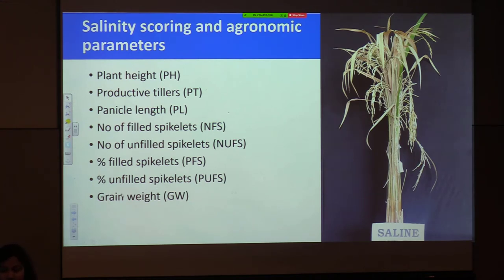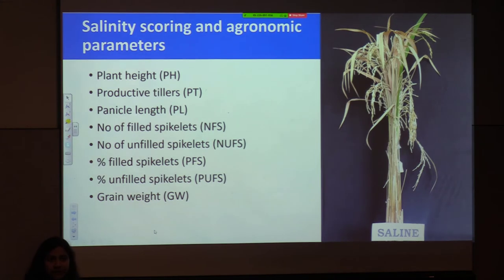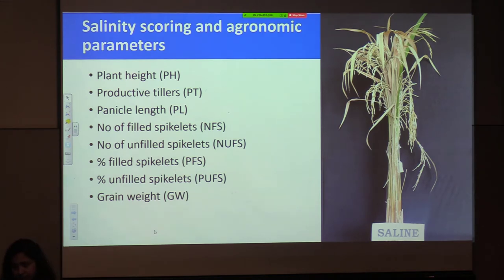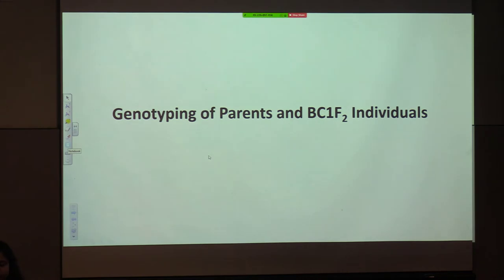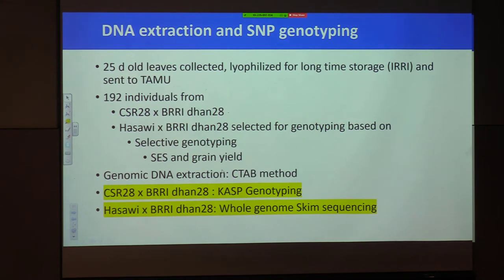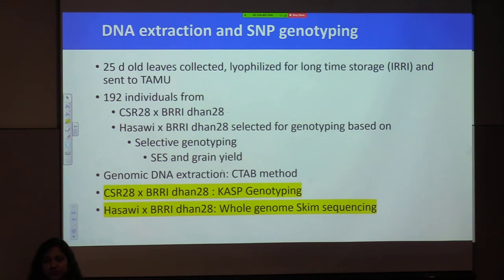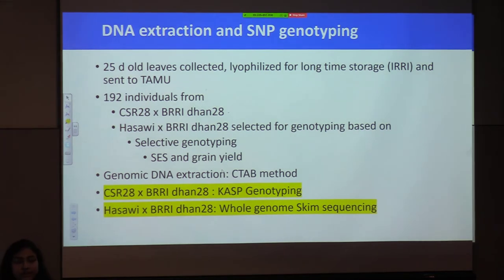This is how I finished my IRRI work — collecting data and completing the screening of two populations: CSR 28 × BRRI Dhan 28 from roughly February to August, and Hassawi × BRRI Dhan 28 in the second part of the year. Then I came back to Texas A&M and started my genotyping work. While at IRRI, we collected 25-day-old leaf samples, lyophilized them, and processed them for transport from IRRI to Texas A&M. We then selected 192 individuals from both populations based on selective genotyping, ACS, and grain yield.